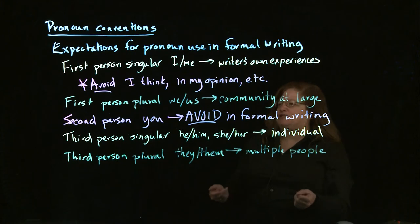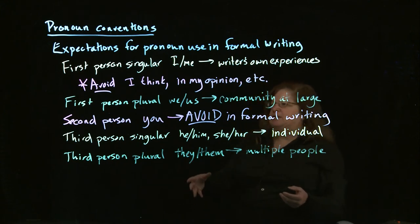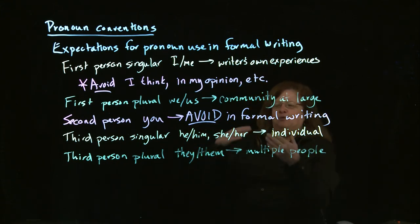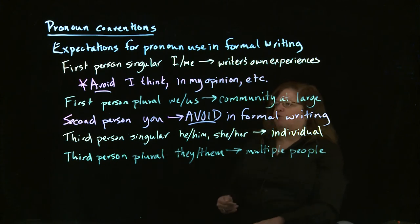For example, in an essay on abortion, I may see what if you were pregnant and you did not know what to do. You can fix that either by saying what if a woman were pregnant and she did not know what to do. Or you can take it to the third person: what happens when women plural are pregnant and they don't know what to do.